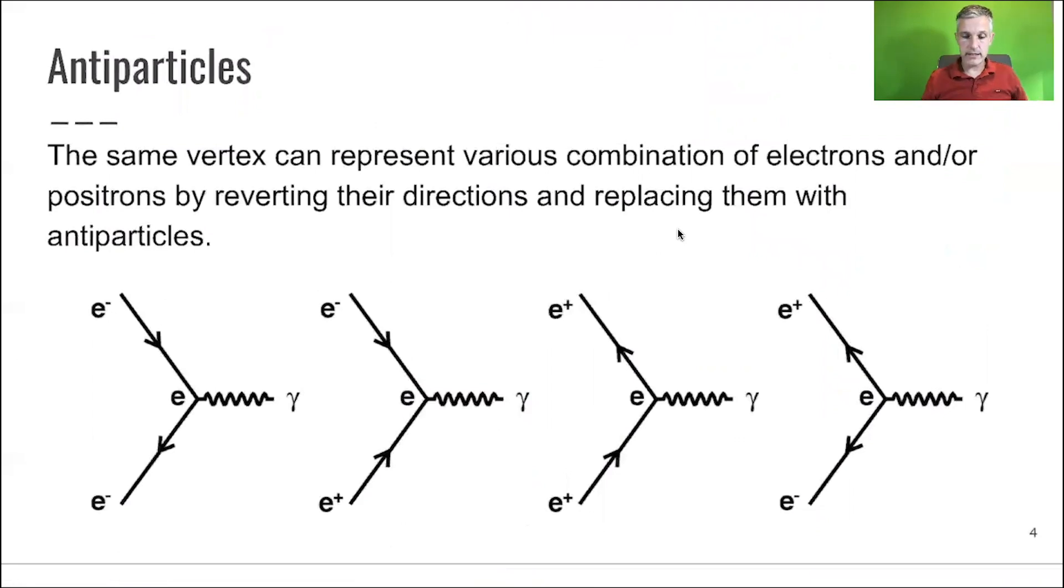Interesting here, antiparticles. If you have a specific vertex and you calculate it, it can be reused. It can be reused, for example, by replacing a particle with an antiparticle or by relabeling. One thing I haven't explained to you yet, you have to define when you write them which is the direction of time,